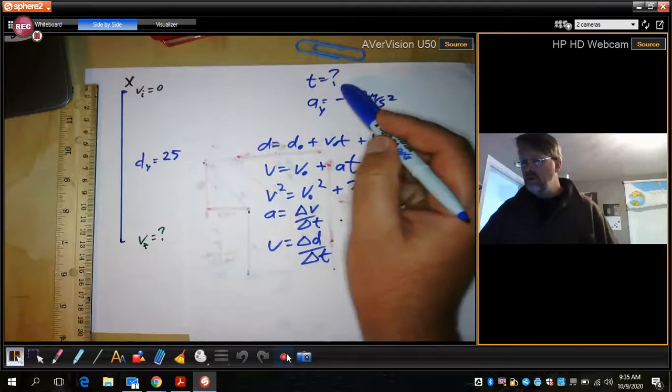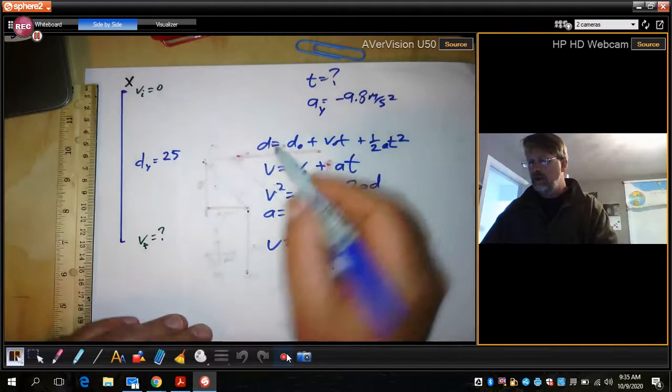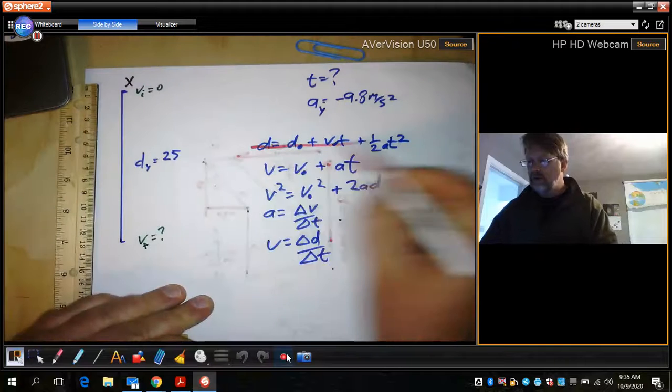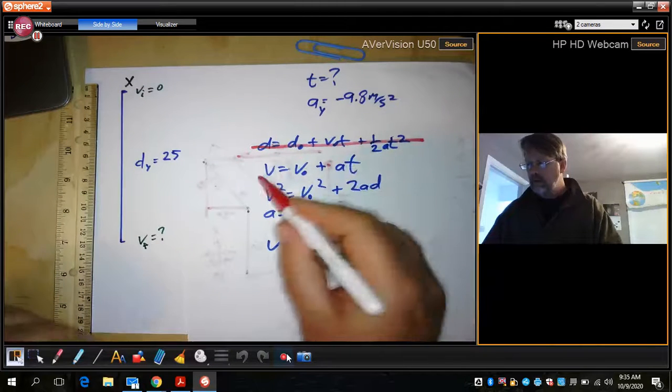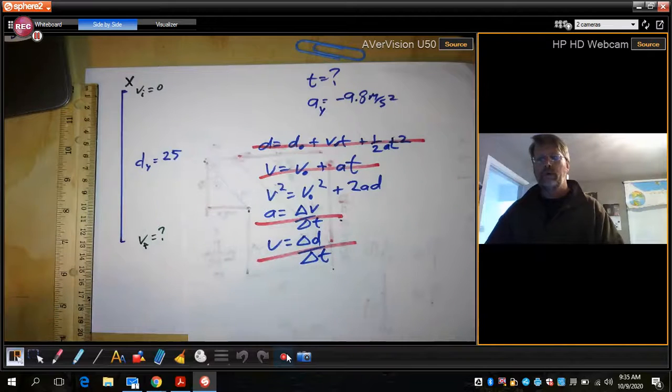So what we don't know is time. So what we want to do is eliminate anything that has time in it. So we're not going to want this one. We're not going to want that one. Well, that becomes a pretty short list now.